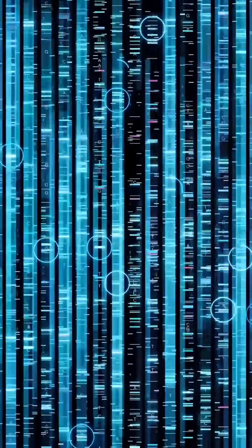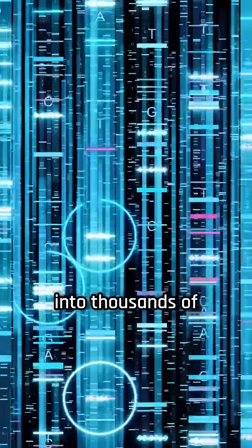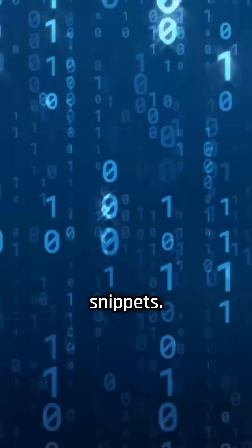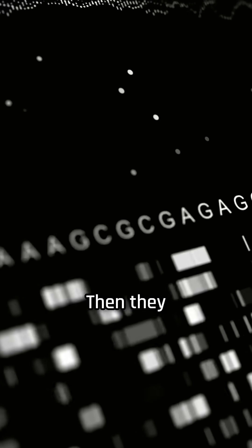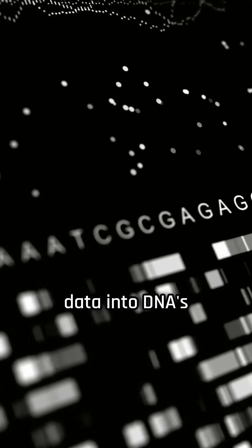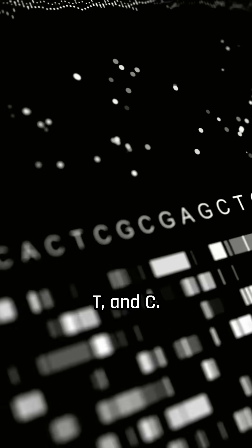In one recent study, researchers encoded a 52,000-word book into thousands of tiny DNA snippets. They started by converting the book into binary, strings of zeros and ones. Then they translated that data into DNA's four-letter alphabet: A, G, T, and C.